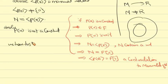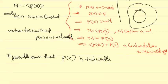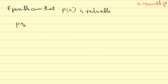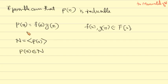We have to show that p(x) is irreducible. If possible, assume that p(x) is reducible. We need to show that the ideal generated by p(x) — assuming p(x) is reducible — leads to a contradiction.